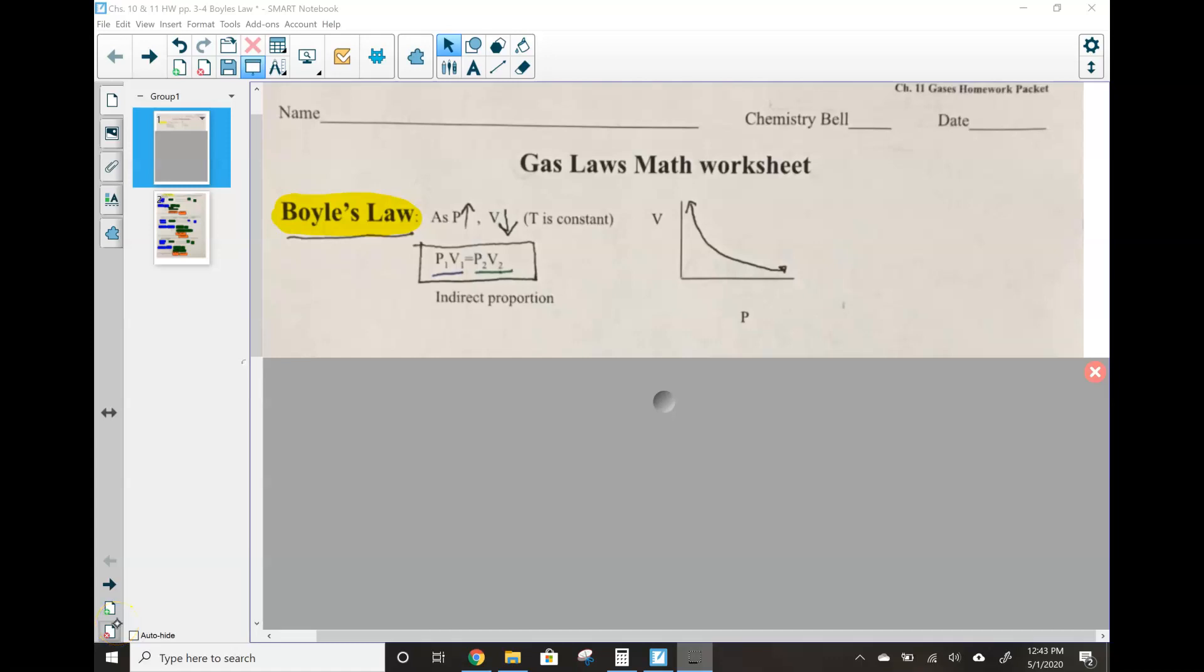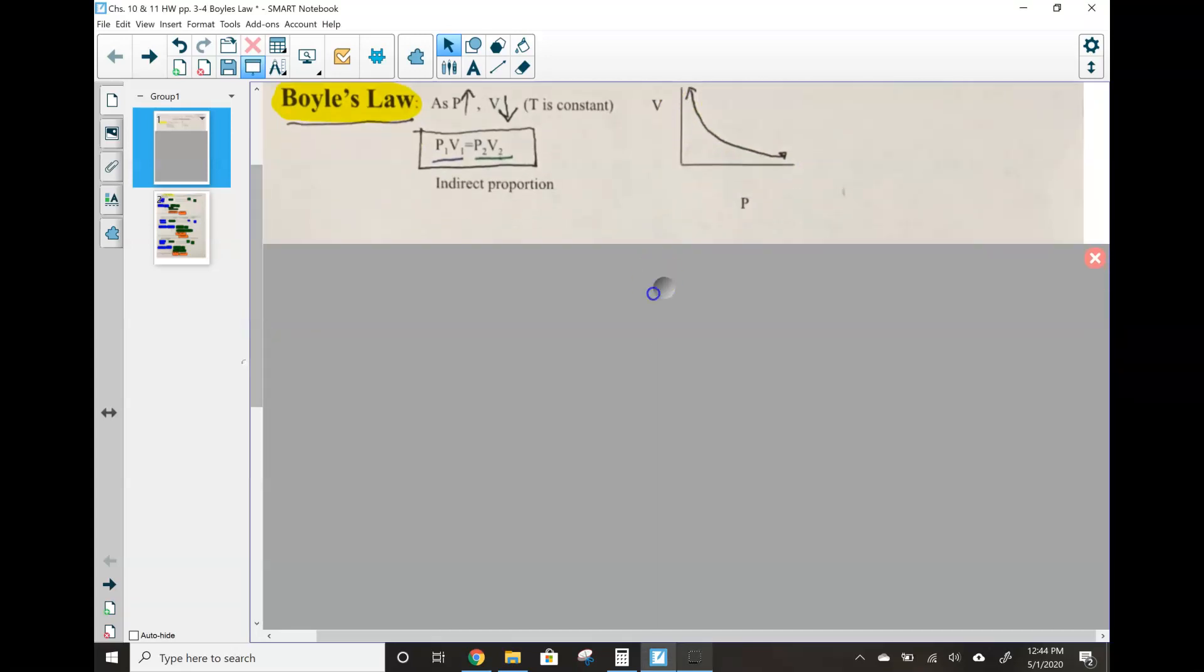Welcome back, guys. It's Ms. Macaulay. I'm back to talk to you about Boyle's Law. So what you've learned from the intro notes is that as pressure goes up, volume goes down, keeping everything else, like temperature, constant. That's an indirect relationship, and we can use that relation to write this equation.